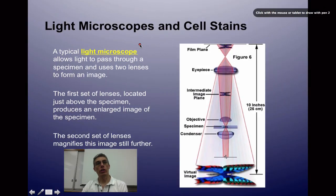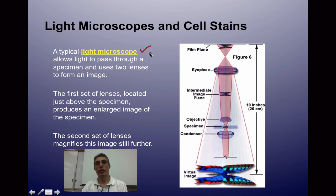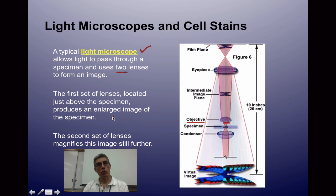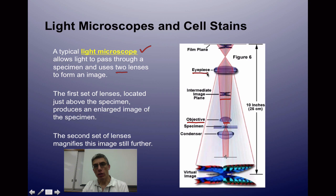Next, let's look at the type of microscope you'll be using in the classroom — a light microscope, also called a compound microscope. It's compound because it uses two lenses to form the image. The first set of lenses is located just above the specimen in the objective, and it produces an enlarged image of the specimen. The second set of lenses in the eyepiece magnifies that image even further. Those two lenses working together produce the enlarged virtual image of whatever you're looking at.